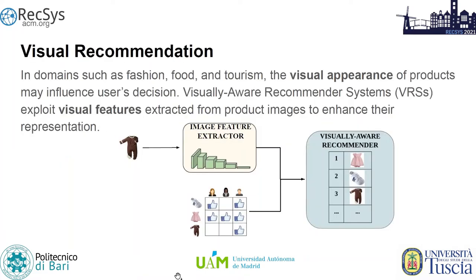When the visual appearance of products is important for users' final decision, we talk about visual recommendation. Visual-aware recommender systems are the family of recommender systems which make use of visual features extracted from product images by means of pre-trained convolutional neural networks.